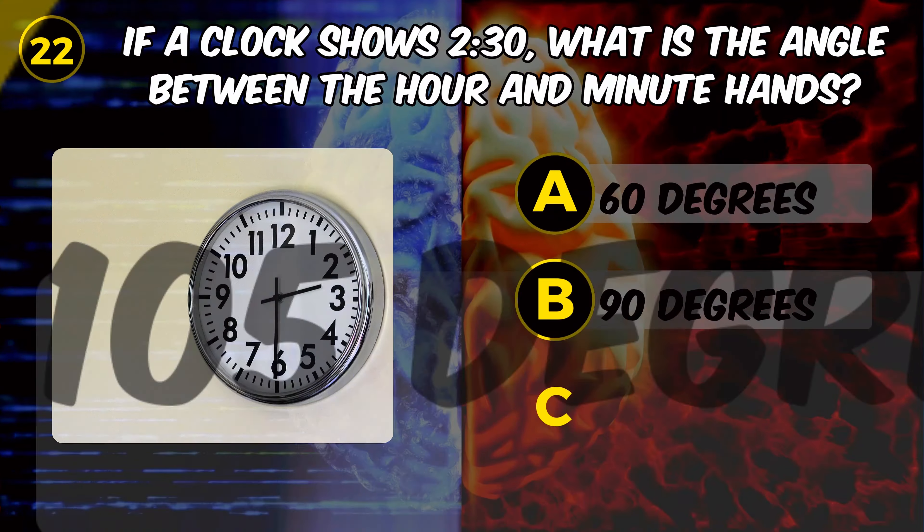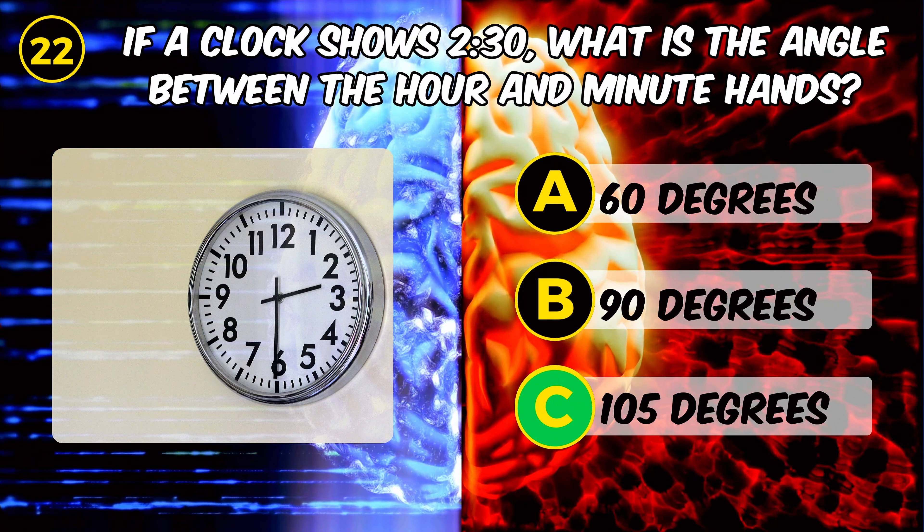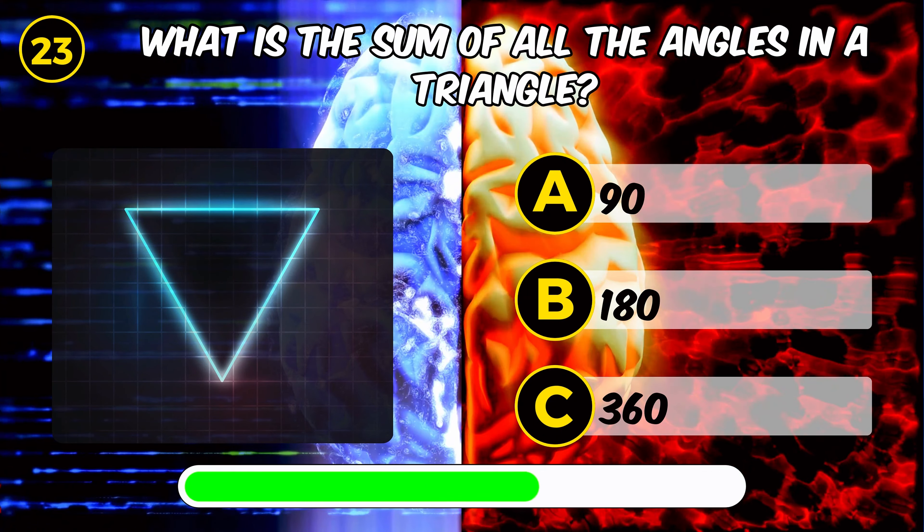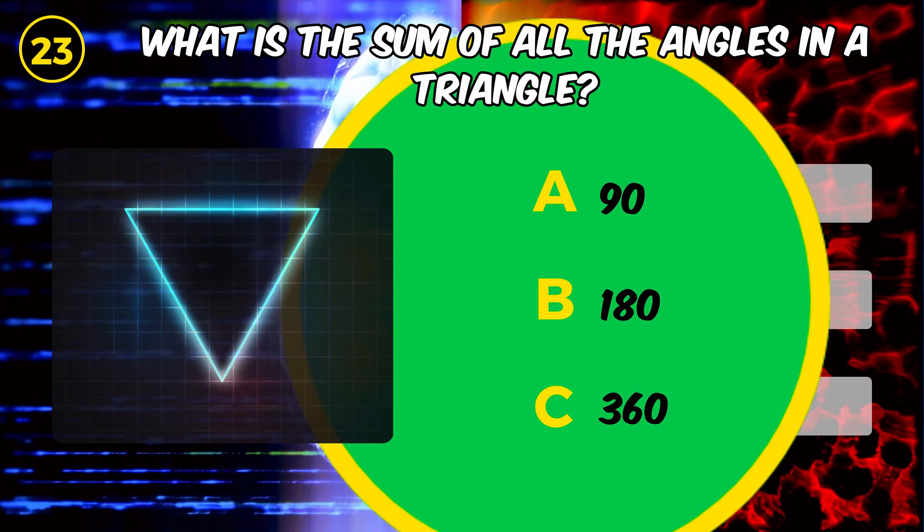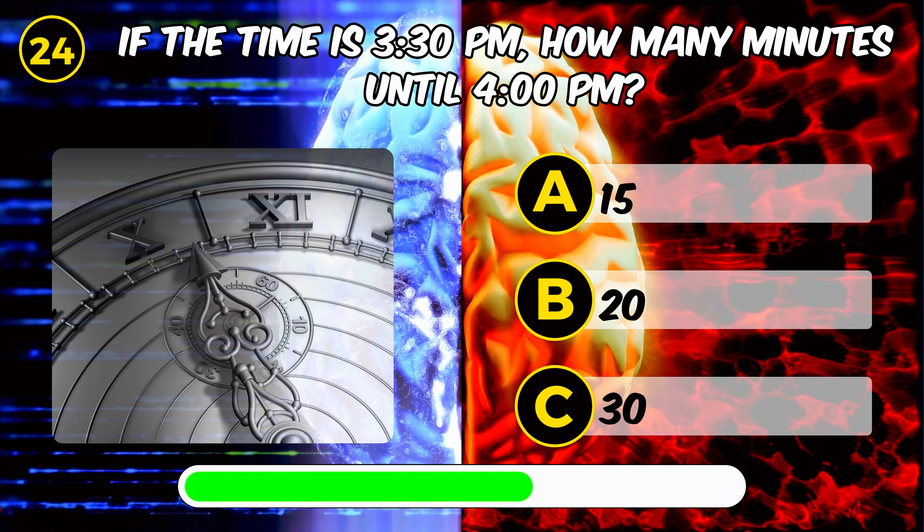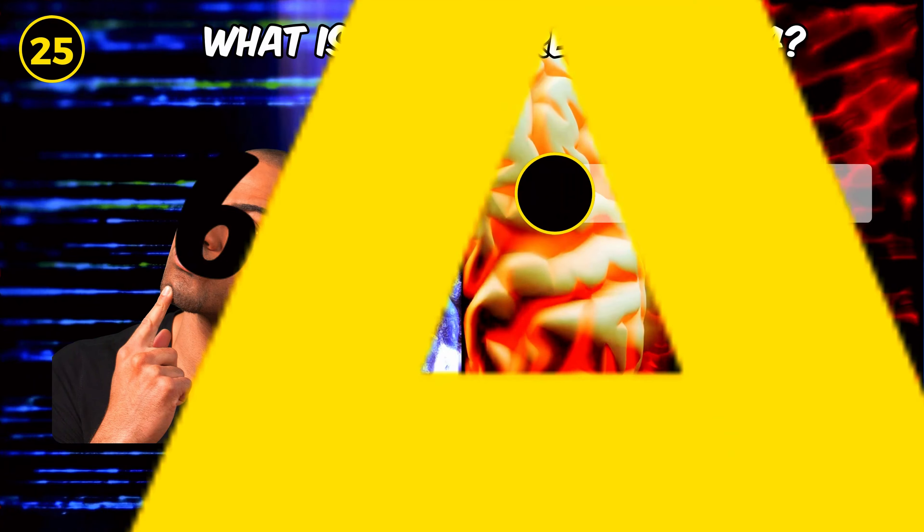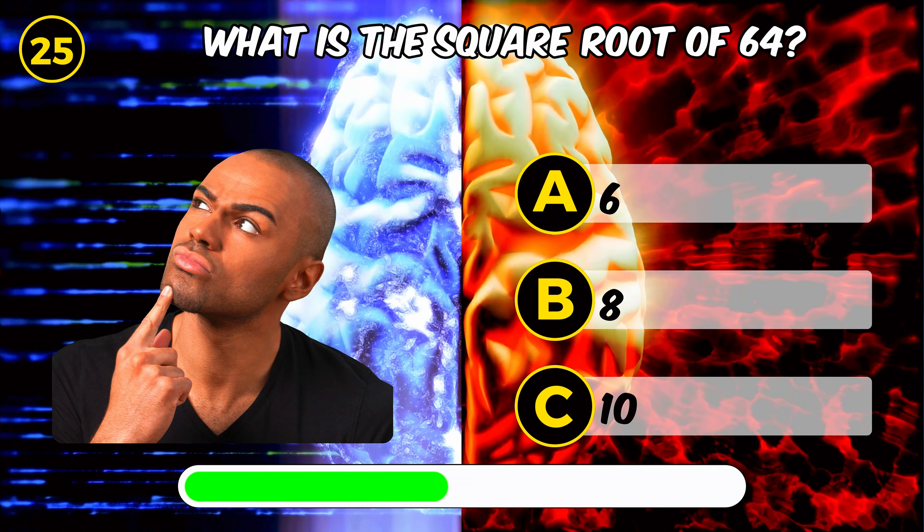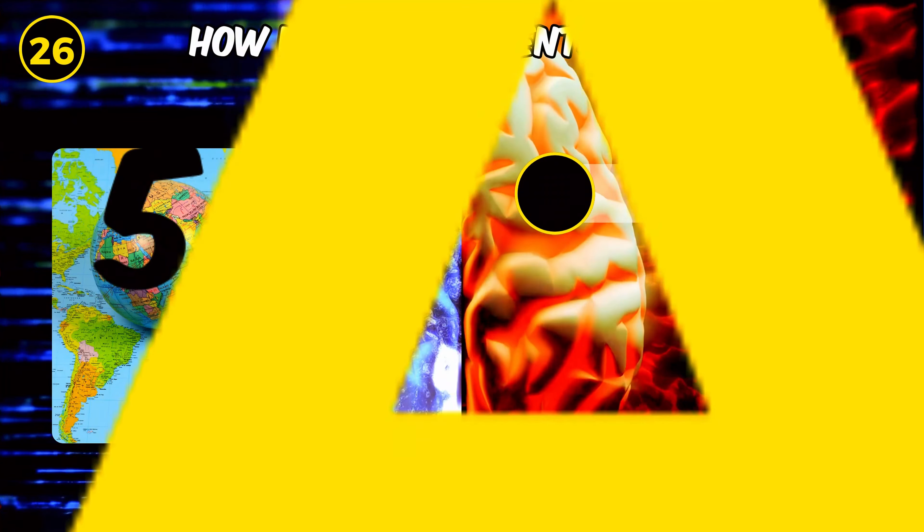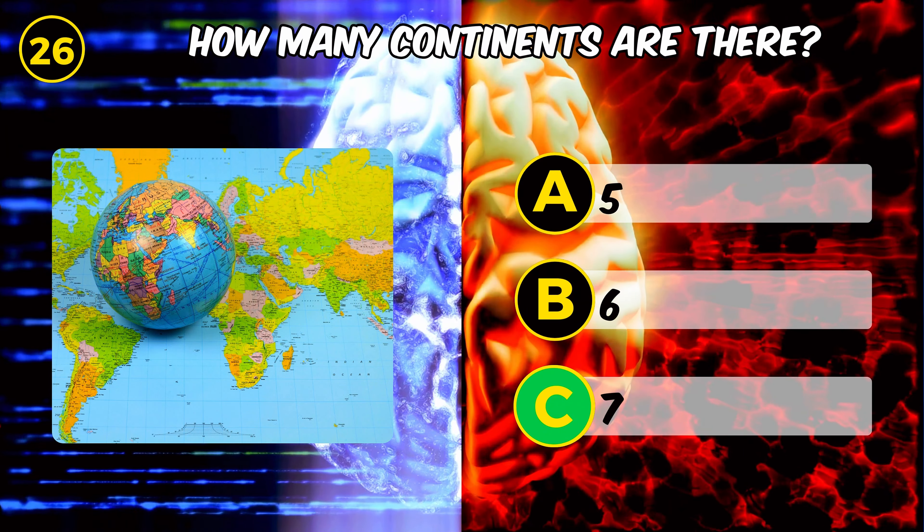If a clock shows 2 and 30, what is the angle between the hour and minute hands? 105 degrees. What is the sum of all the angles in a triangle? 180. If the time is 3:30 PM, how many minutes until 4 PM? Correct, 30. What is the square root of 64? Eight. How many continents are there? Seven.